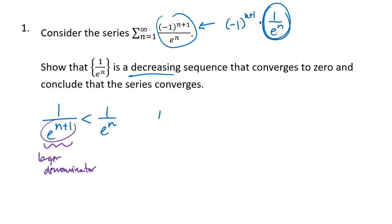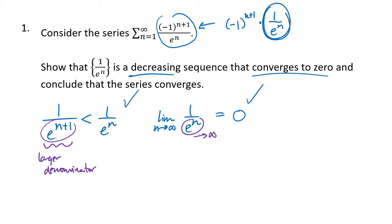For converging to zero, we consider the limit as n goes to infinity of 1 over e to the n. Since e to the n on the bottom goes to infinity, this limit equals zero. We've shown the two things we need, so by the alternating series test, this series converges.